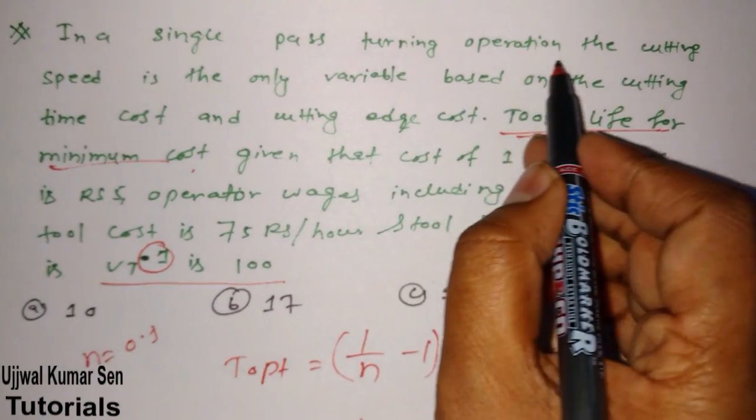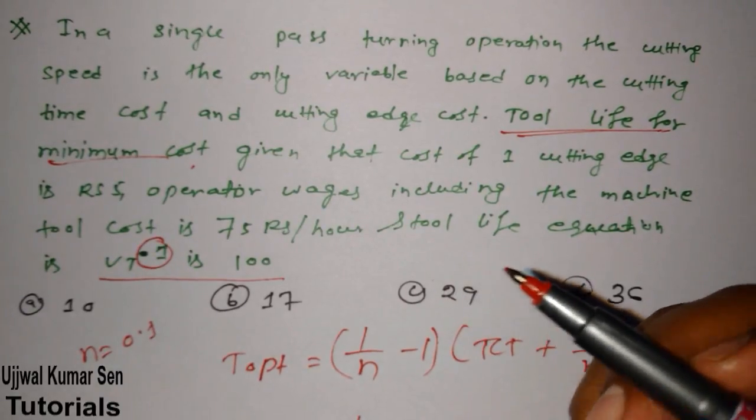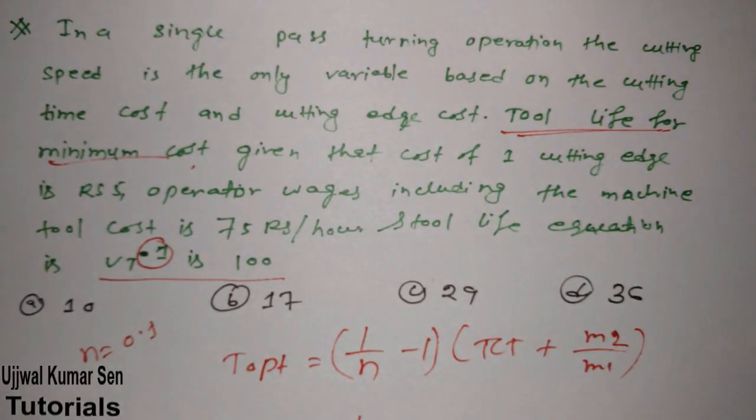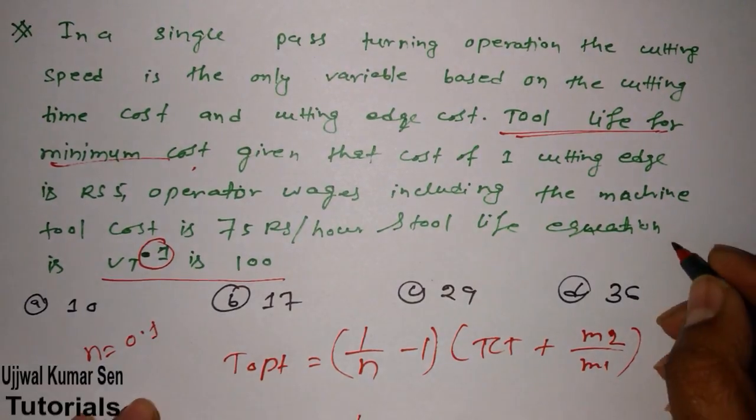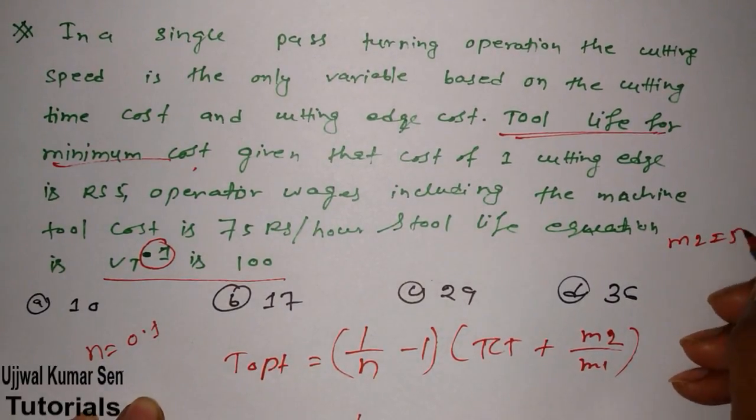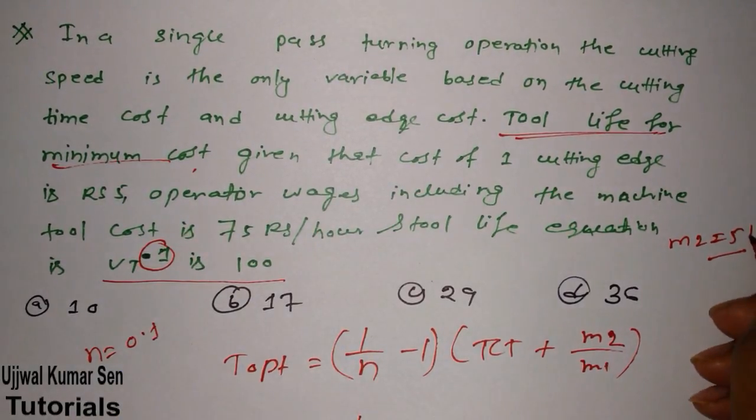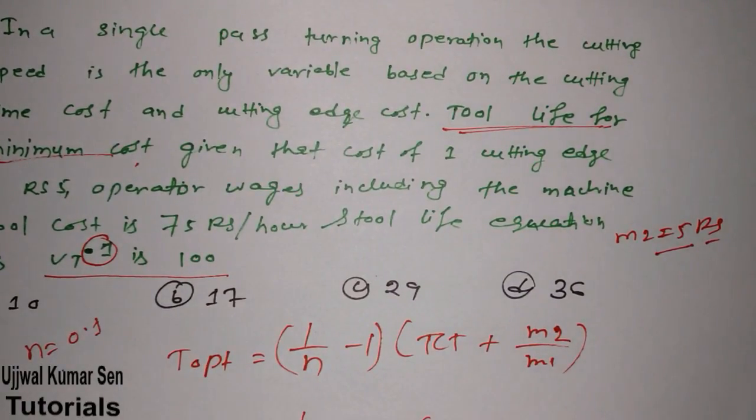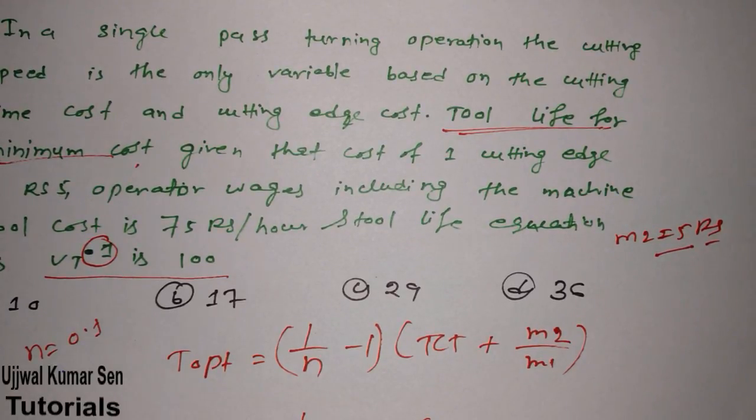Just keep writing what exactly we are getting. TCT, we don't have given, we don't know. But I have read the question, we don't have given TCT. How to read the question? Don't worry, read it. In a single pass turning operation, the cutting speed is the only variable based on the cutting time cost and cutting edge cost. Tool life for minimum cost given that cost of one cutting edge is this. So what we got from here is that M2 is equal to 5. As I have shared with you, M2 is tool cost per regrind, that is 5 rupees.